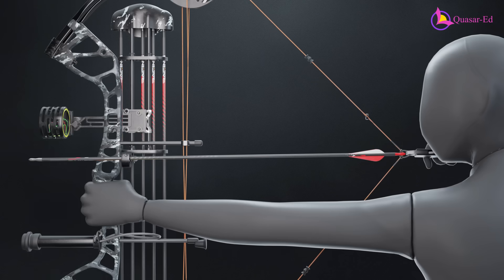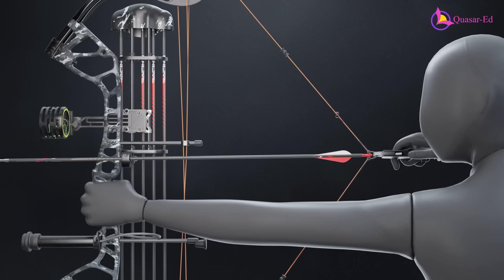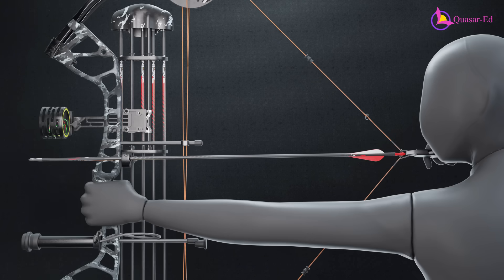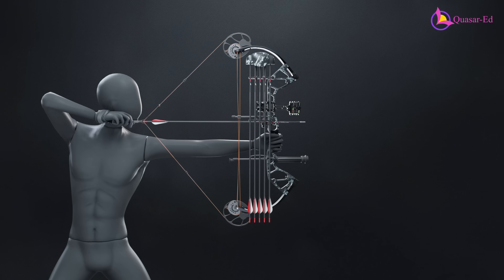However, to benefit from this let-off, the archer must pull the string all the way to its full draw length. When selecting a compound bow, ensure the draw length matches your arm length for a proper fit.